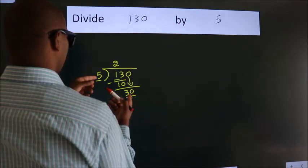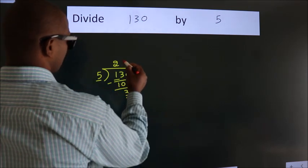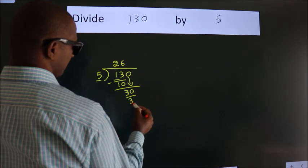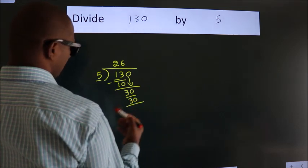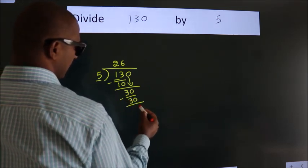When do we get 30? In the 5 table, 5 times 6 equals 30. Now we subtract. We get 0.